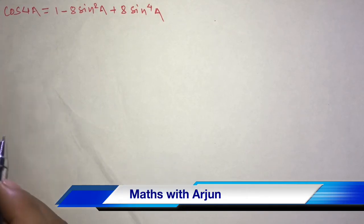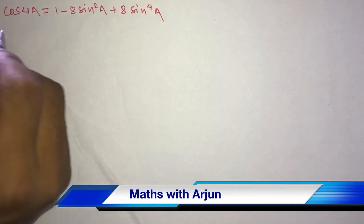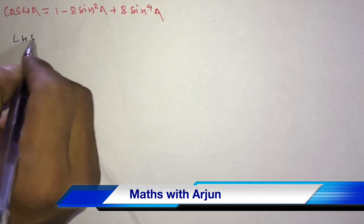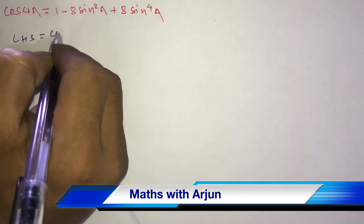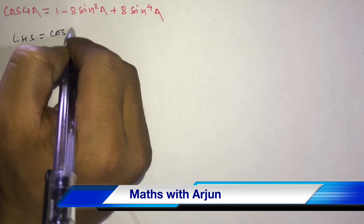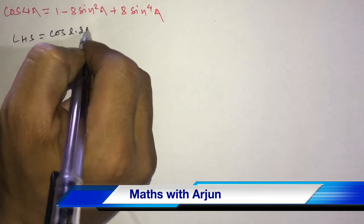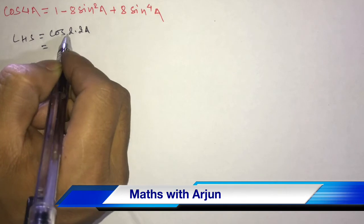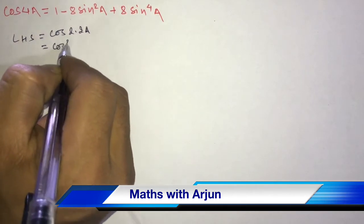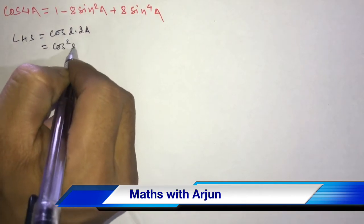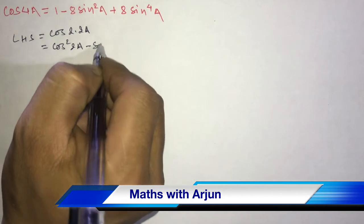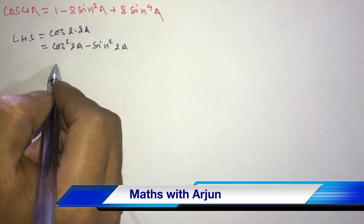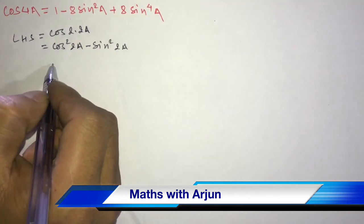Starting from LHS. LHS equals cos 4a. We can write this as cos 2 into 2a, that is cos 4a. Now use the formula of cos 2a, that is cos squared a minus sine squared a. Here a is replaced by 2a, so we write cos squared 2a minus sine squared 2a.